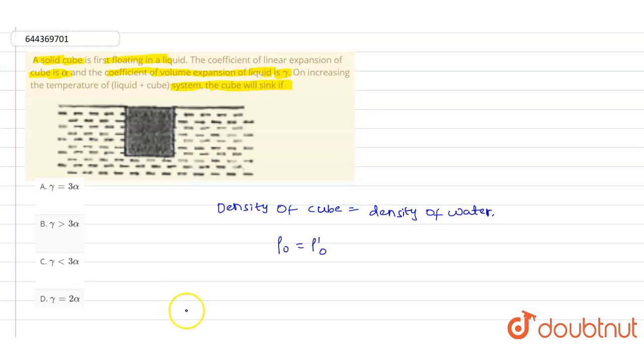Now we know that the fractional change in the density ρ will be equals to ρ₀ into 1 minus 3αΔt. Let us suppose this is equation number one for the cube.